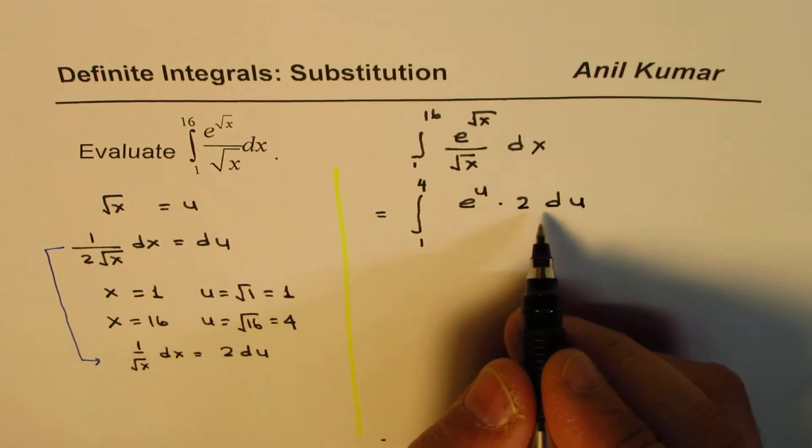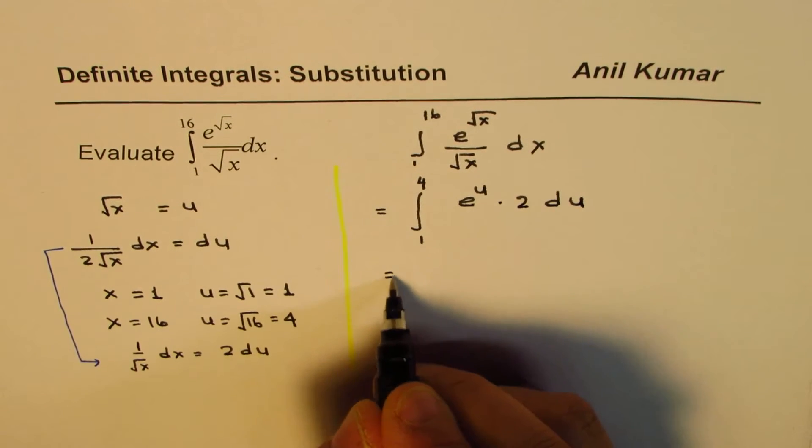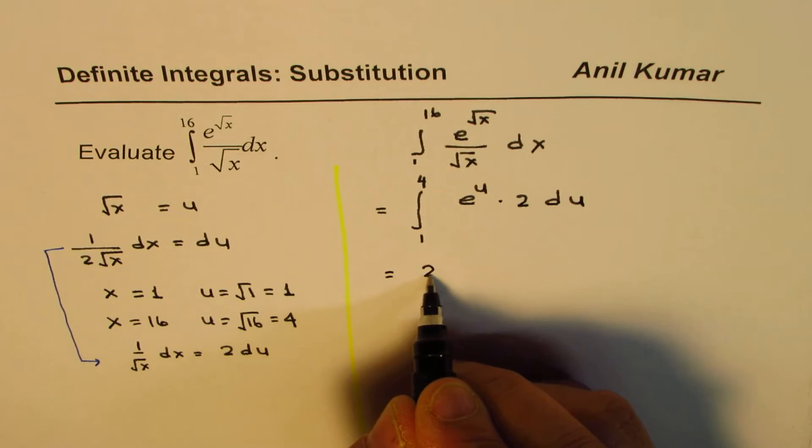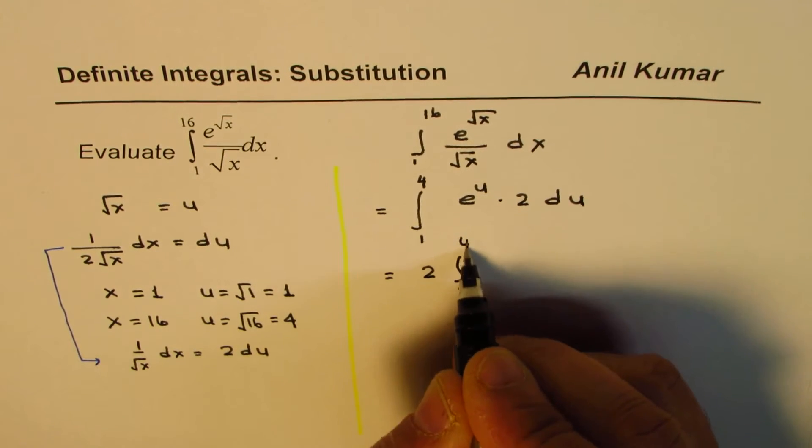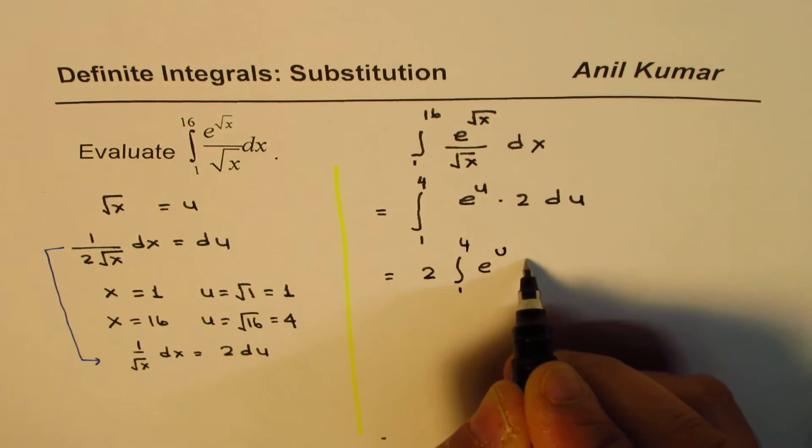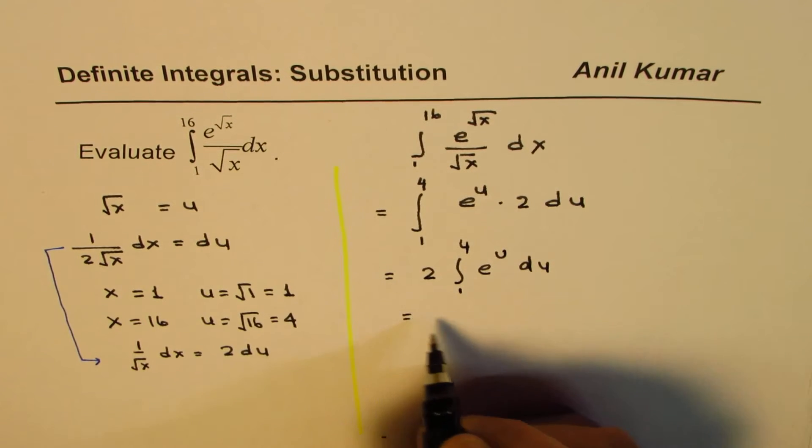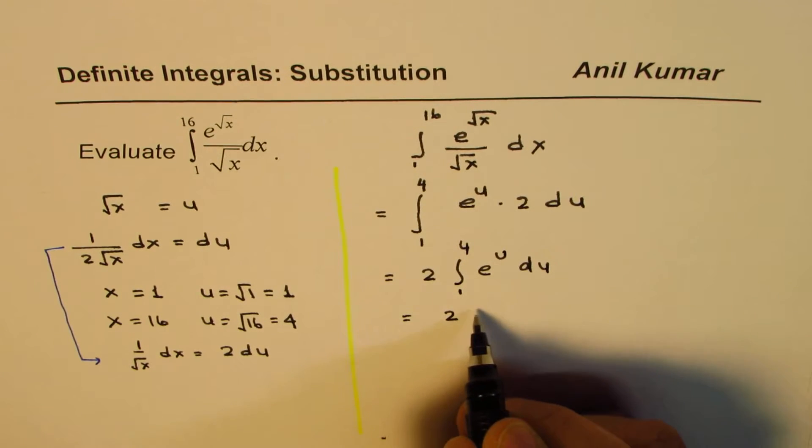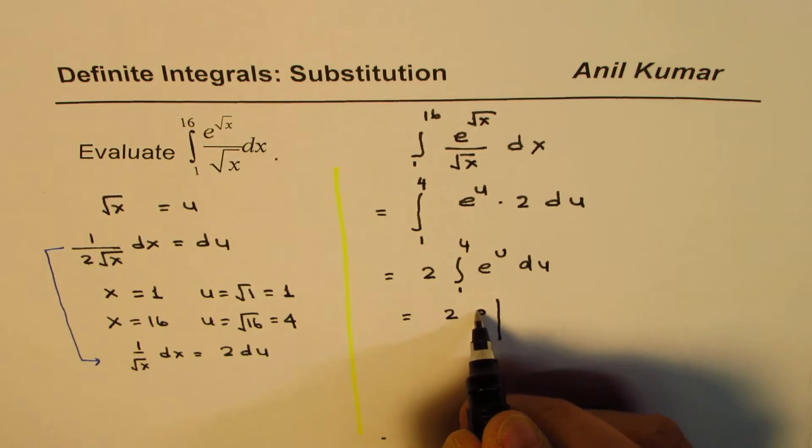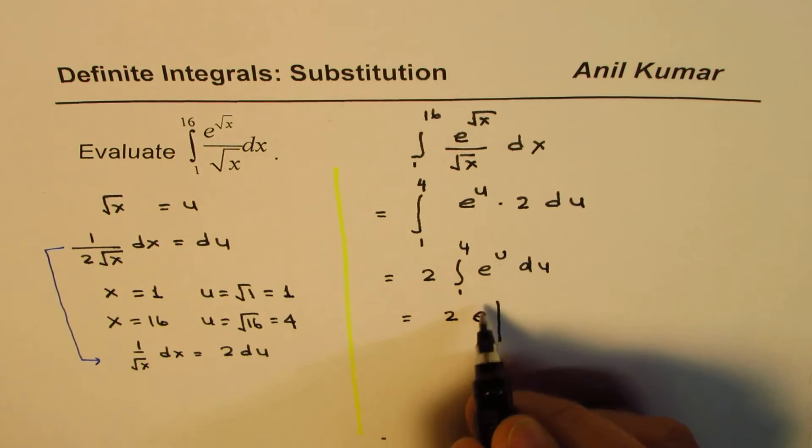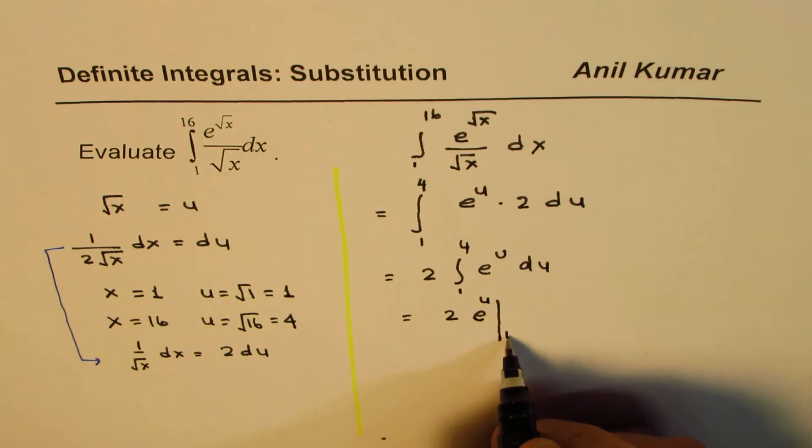So that becomes the definite integral which we need to now evaluate. We can take this 2 as a constant and we have 1 to 4 e to the power of u du. That is 2 and then integral of this is e to the power of u itself from 1 to 4.